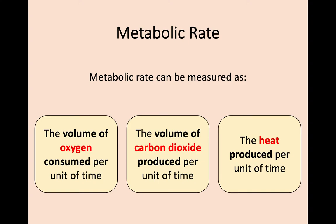The second method is almost the opposite — it's the volume of carbon dioxide produced per unit of time. If you're taking in oxygen for respiration, you're going to be producing carbon dioxide, and that can be a measurement of your metabolic rate. The third is heat produced per unit of time, because as your mitochondria generate energy, your body produces heat.